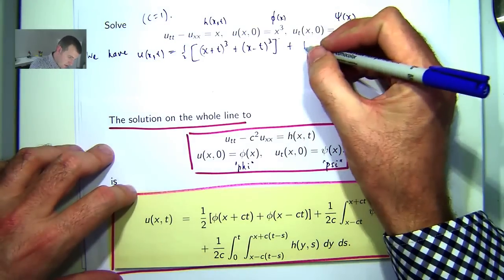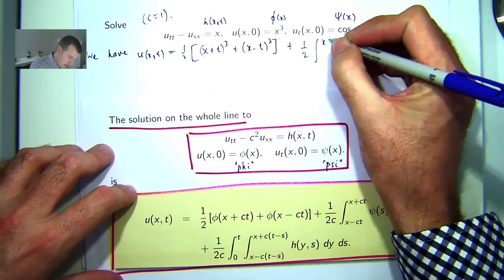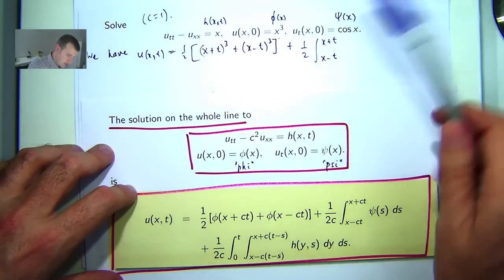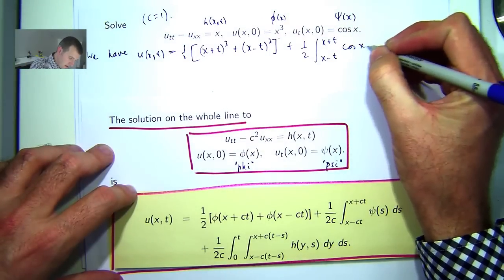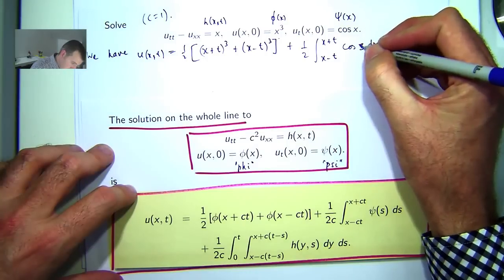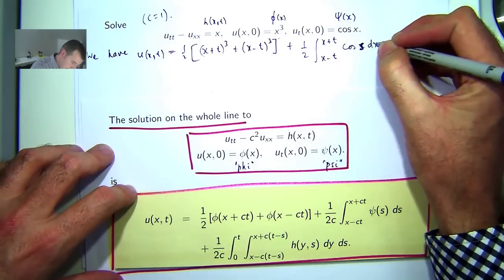Now c is 1, so we get this and psi is cos x. Ah, sorry, here I'm integrating, the dummy variable on this one is s.